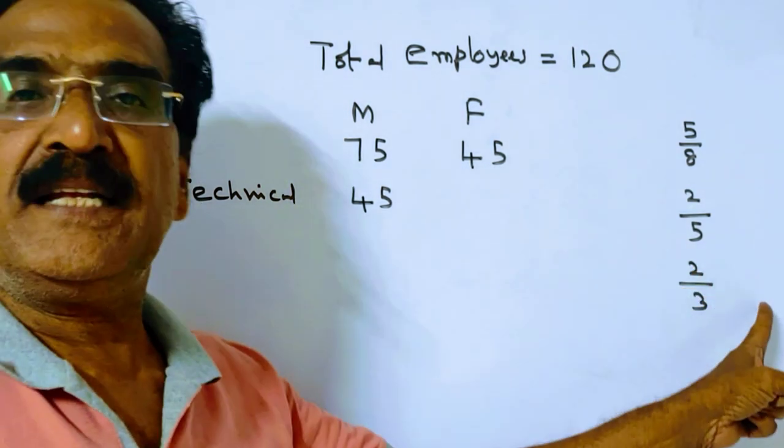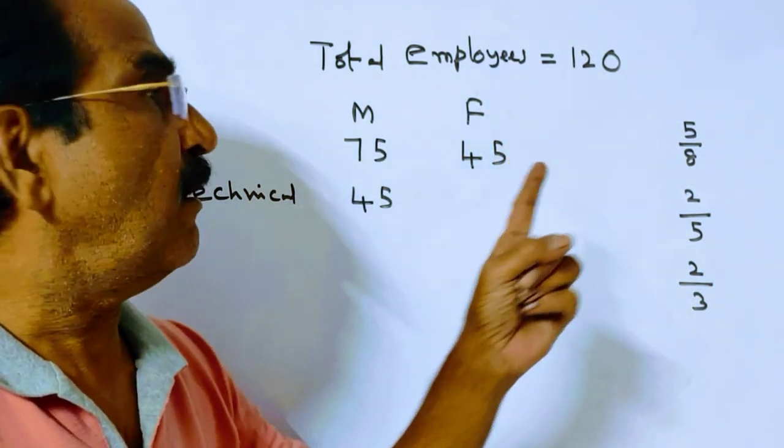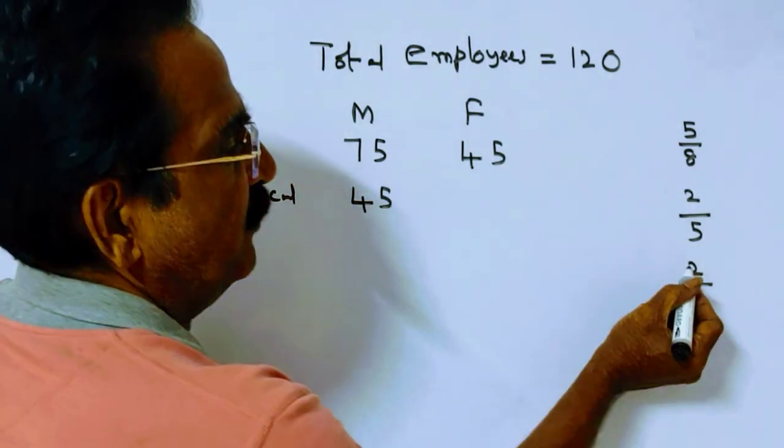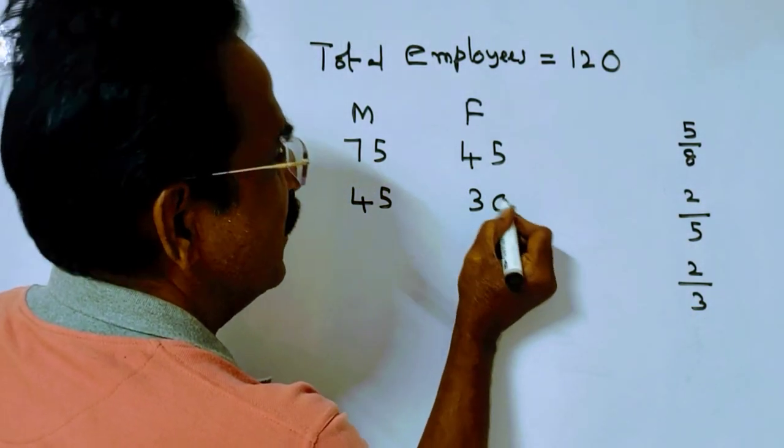Coming to females, 2 by 3 of females are technical. 45 into 2 by 3 equals 30.